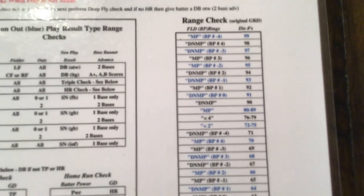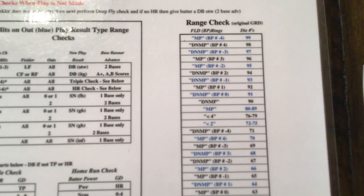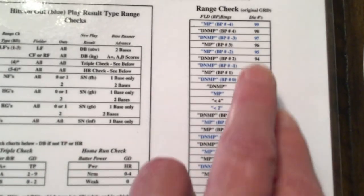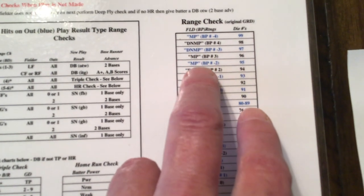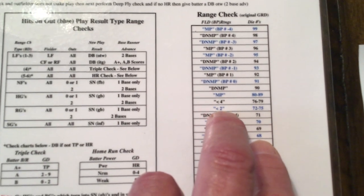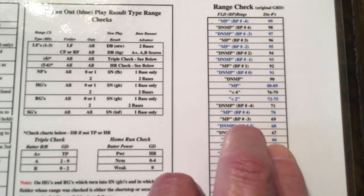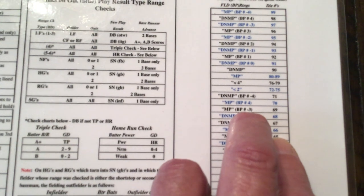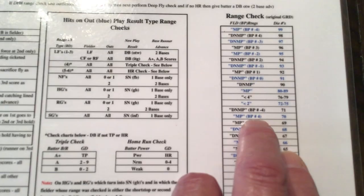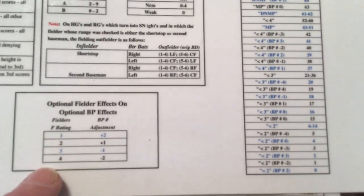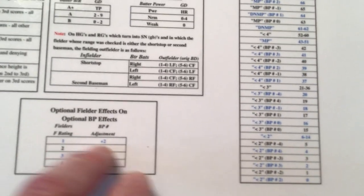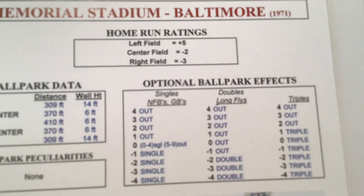Here is the actual range check chart — you're using the original green-red die values, and it will tell you whether the fielder made the play or not. If it says less than four, he made the play; if his rating is one, two, or three he made it, a four means he did not. Sometimes you see BP numbers; in that instance you use the optional ballpark effects, take that number, adjust for the fielder's range rating, then take that to the actual ballpark card for those columns to see whether the fielder made the play. We'll go through a play on that.